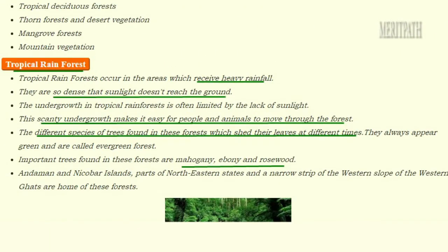The natural vegetation of India — plants which grow on their own — can be divided into five types: tropical rainforests, tropical deciduous forests, thorn forests and desert vegetation, mangrove forests, and mountain vegetation.